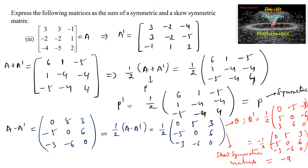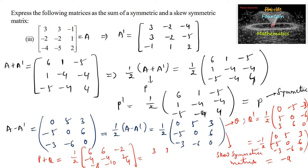Q is a skew symmetric matrix. We can also observe that P plus Q equals 1/2 times of: [6+0, 1+5, -5+3; 1-5, -4+0, -4+6; -5-3, -4-6, 4+0] = 1/2 of [6,6,-2; -4,-4,2; -8,-10,4] = [3,3,-1; -2,-2,1; -4,-5,2], which is the given matrix A.